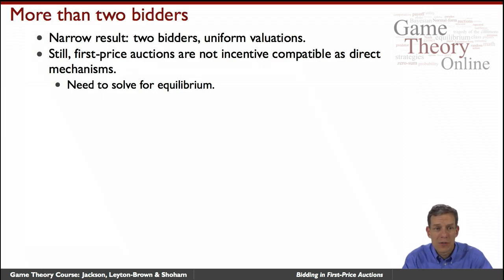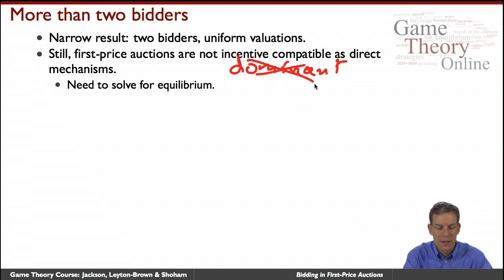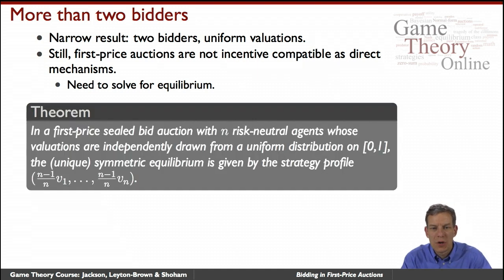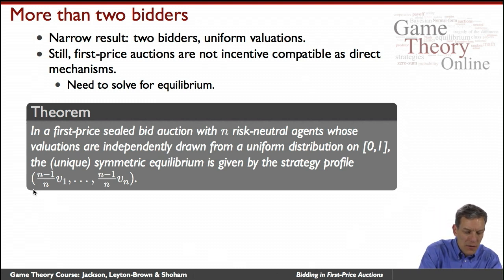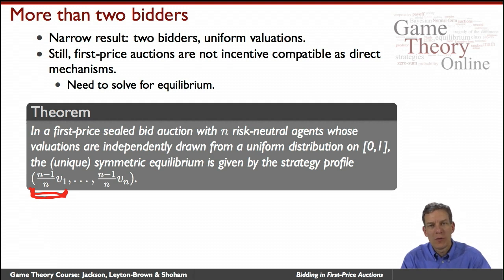This is obviously a narrow result — two bidders, uniform valuations. More generally, if we had n bidders instead of two, the equilibrium bidding formula becomes (n−1)/n times your value. When n=2, this is 1/2; when n=3, it's 2/3; when n=4, it's 3/4, and so forth — you keep climbing in terms of how much you're bidding relative to your value.